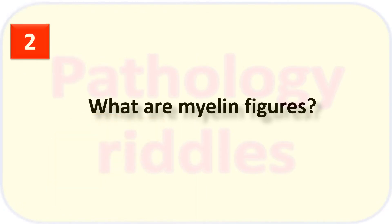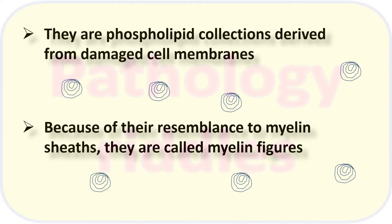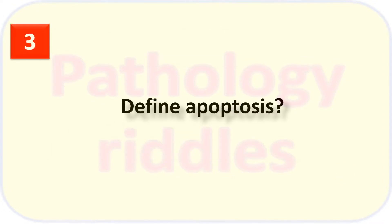Question 2: What are myelin figures? Myelin figures are phospholipids collected in one place, derived from all the damaged cell membranes. Cell membranes have these phospholipids; once they are damaged, they collect in one place. Because they resemble the myelin sheath of a nerve, they are called myelin figures.